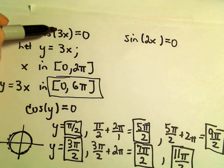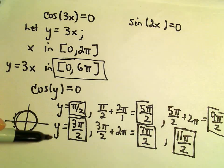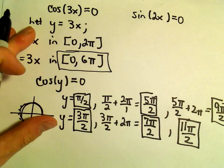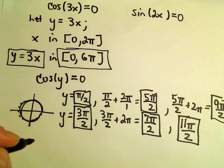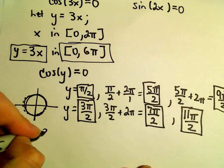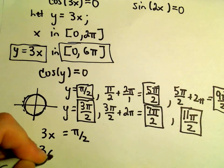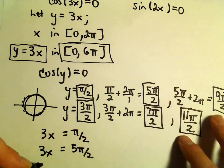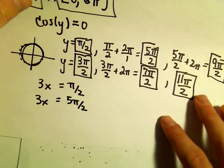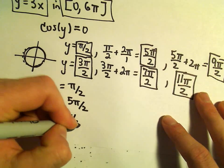Those are not solutions to the original equation. We've simply figured out values for y. But what I'm going to do now is, since y equals 3x, that means 3 times x could either equal π/2, 3x could equal 5π/2, 3x could equal 9π/2.